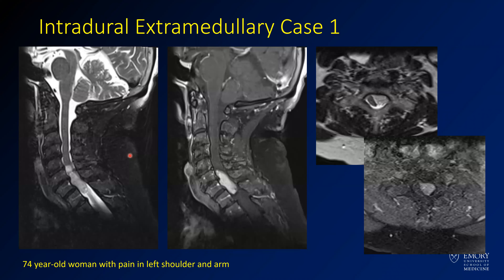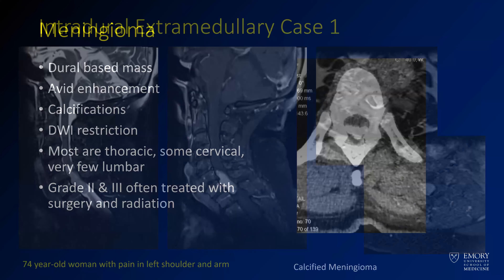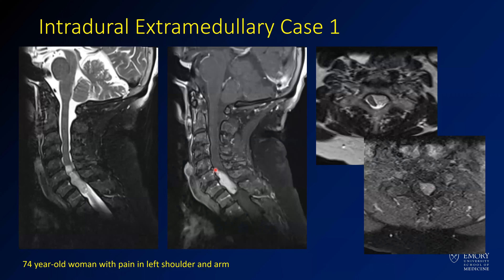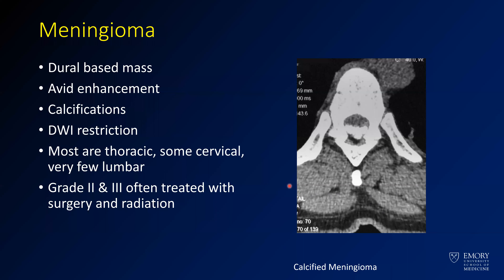This is a 74-year-old woman with an intradural extramedullary lesion and similar degree of enhancement with an enhancing nodule. On the axials, the cord is actually pushed off to the side, deviated by the mass. This woman was having pain in her left shoulder and arm. This was a meningioma — you can see a little dural tail, and they can really mimic schwannomas. If you see a calcified lesion within the spinal canal, definitely think about meningioma. If you saw this within the brain, you'd be almost certain it was a meningioma. They're treated the same as brain meningiomas: surgery, with radiation for grades 2 and 3.